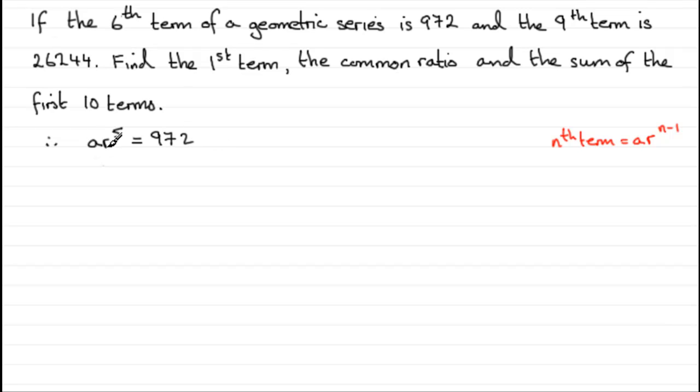Now we've got two unknowns here, a and r, so with one equation there's no way we're going to be able to solve this on its own. We need another equation with a and r in, so I'm going to number that equation 1. This is a sign of simultaneous equations.